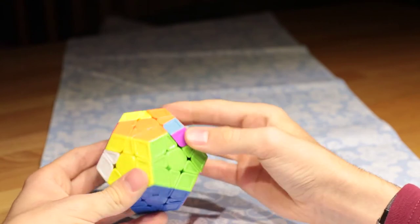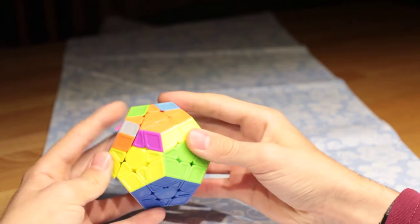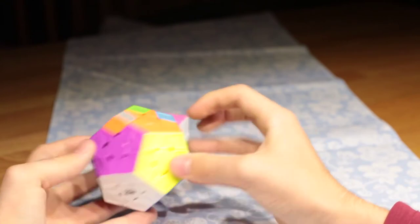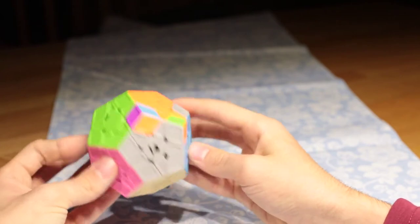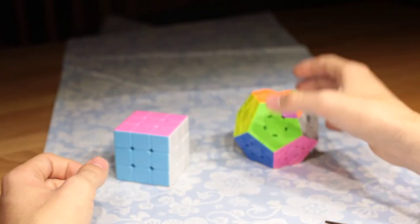You can solve every twisty puzzle with the ONE algorithm, Sledgehammer, and the sexy move. Niklas is just a more comfortable way to position the corners.